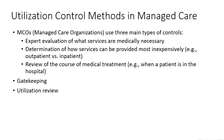MCOs use three main types of controls. First, expert evaluation of what services are medically necessary. Second, determination of how services can be provided more inexpensively — for example, can you get this service as an outpatient, meaning you don't have to stay overnight, versus inpatient, where staying overnight in a hospital bed costs more than simply going in, seeing the doctor, and leaving.